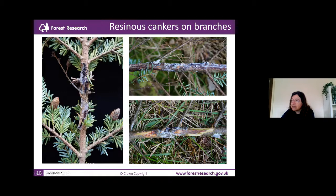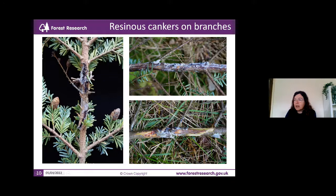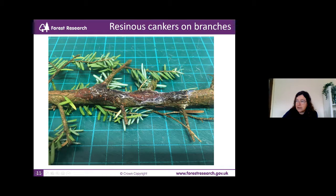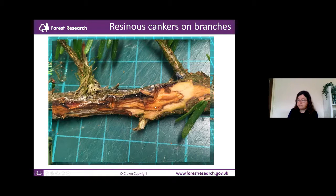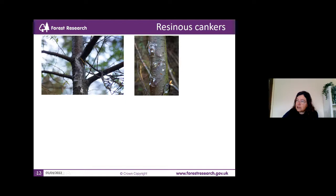These resinous cankers are observed on branches but also on the main stem. You can see the main stem of some of the affected trees — the resinosis, the depressed lesions, and the exudation of resin. When you remove the bark you can see the lesion under the bark. In every single case you will have a lesion into the cambium and phloem area. We also found lesions on the base of the stems — basal lesions — with massive exudation of resin in some cases.